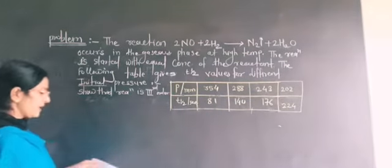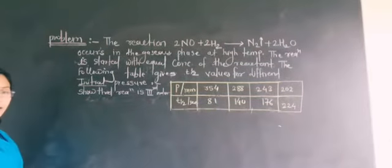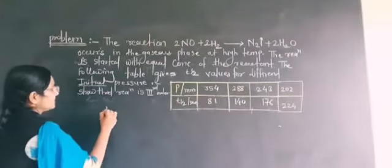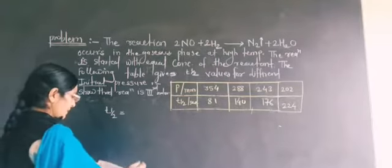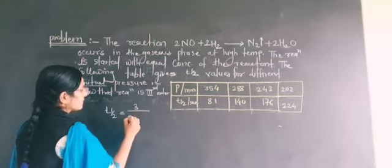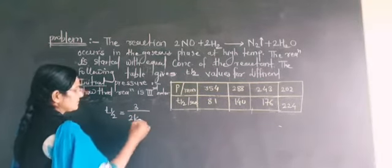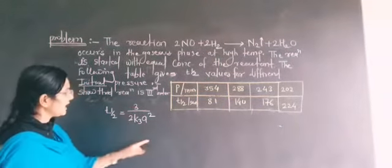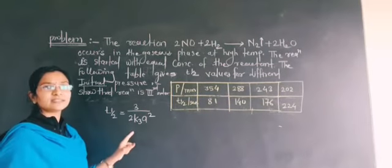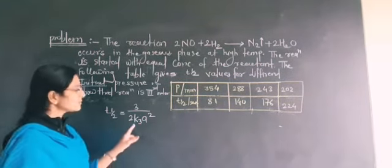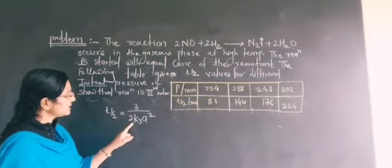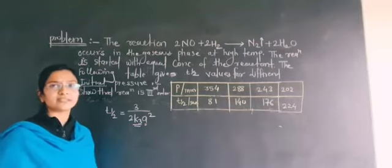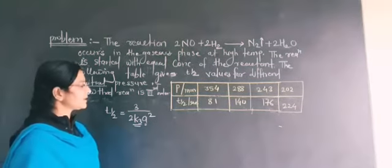The first way is you know that the T1/2 for the third order reaction is calculated by this formula: 3/(2K3A²). We know this formula already. We have already discussed the derivation regarding this one. 3/(2K3A²), where K3 is the rate constant and A is the initial concentration for the third order reaction.